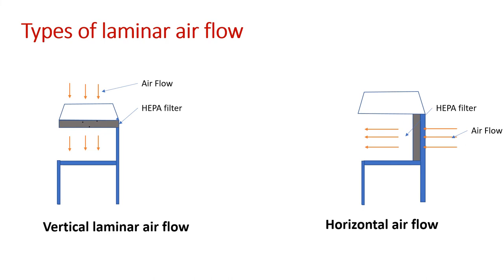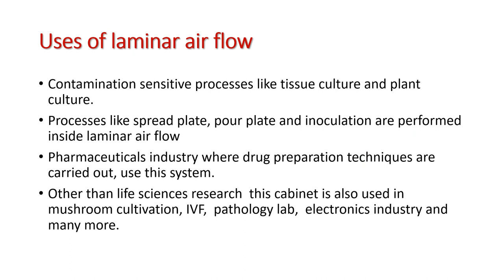Types of laminar airflow. The vertical flow cabinet is the most used type of laminar airflow. In vertical flow cabinet, room air enters the working area through a HEPA filter fitted on top of the cabinet. In the horizontal flow cabinet, air from the back side of the cabinet flows horizontally towards the user, creating a sterile working environment.